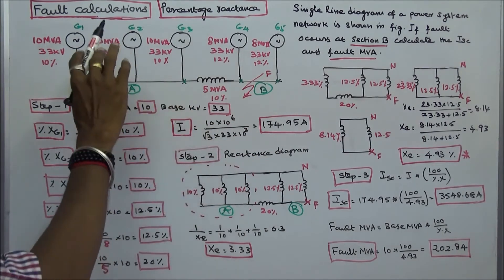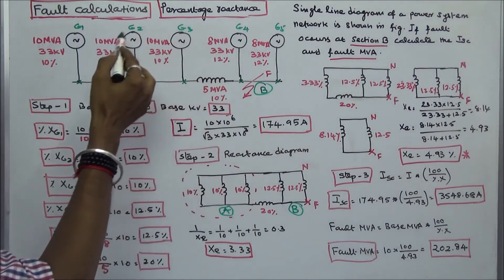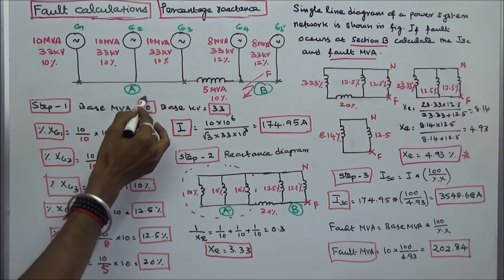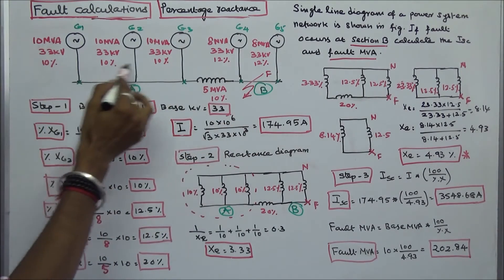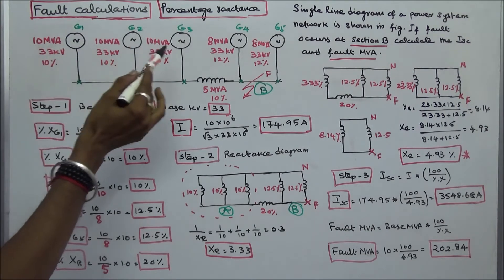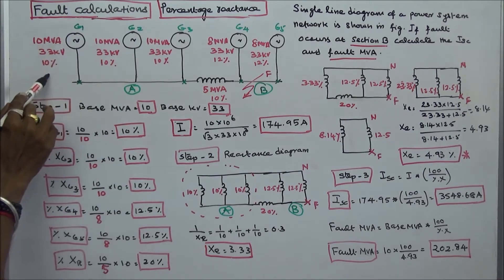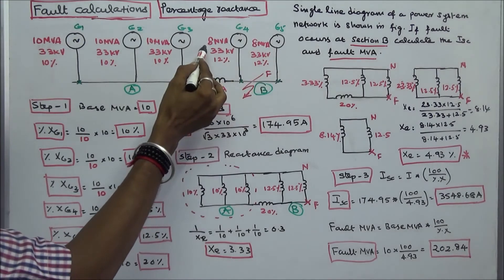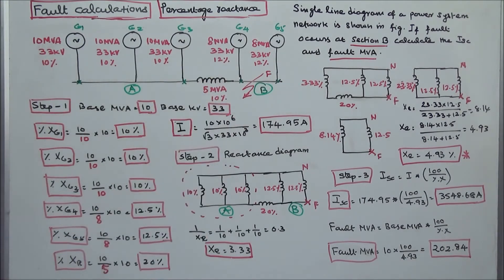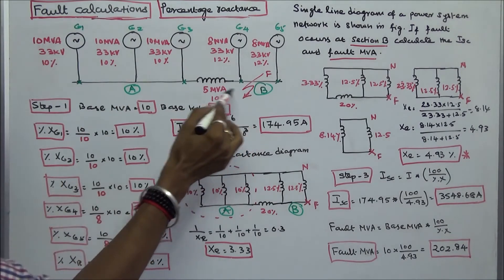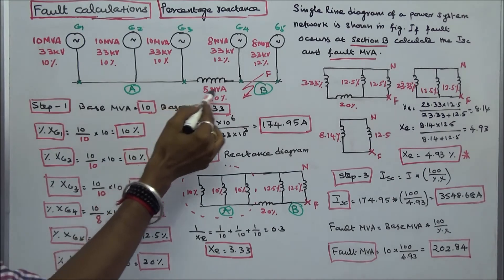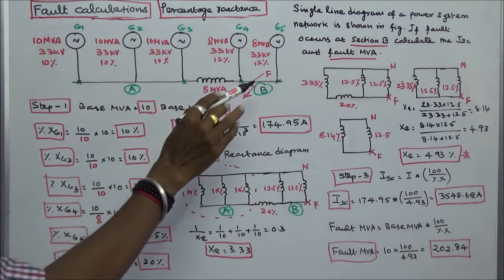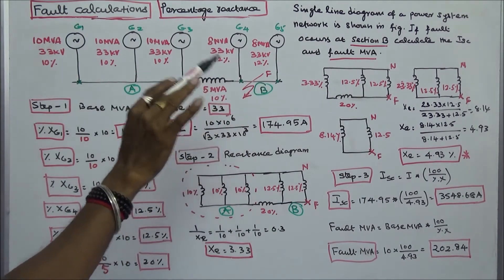This worked problem on symmetrical fault calculation shows a single line diagram of a power system network consisting of two sections, A and B. Section A has three generators, each rated 10 MVA, 33 kV with 10% sub-transient reactance. Section B has two generators, each rated 8 MVA, 33 kV with 12% reactance. Sections A and B are interconnected via a reactor rated 5 MVA with 10% reactance. The question: if a fault occurs at section B, calculate the short circuit current and fault MVA.